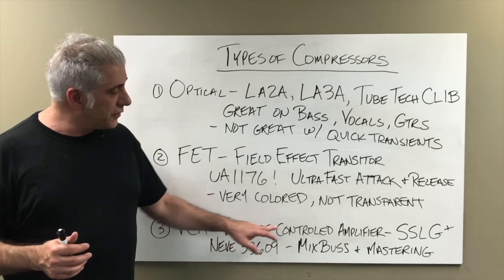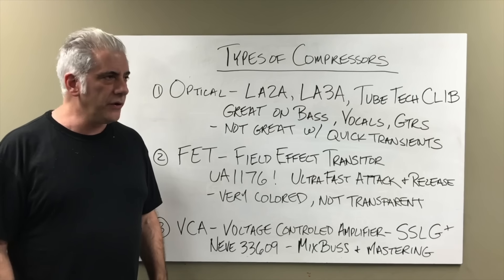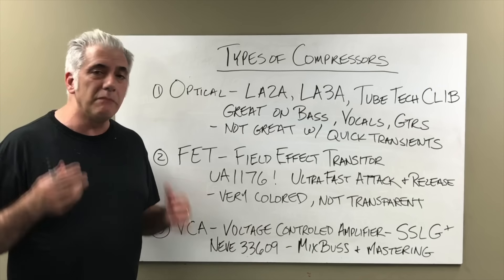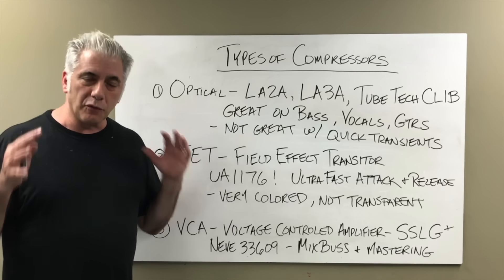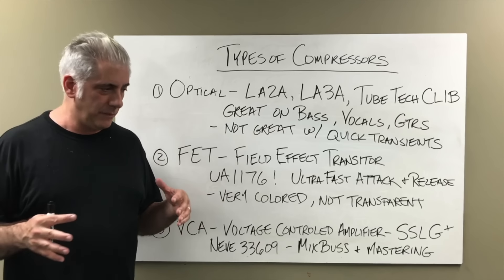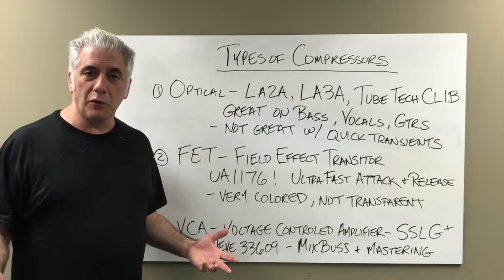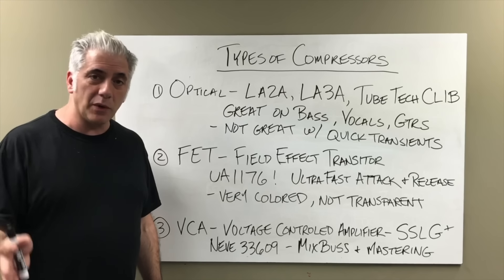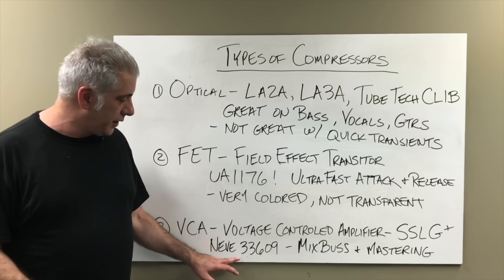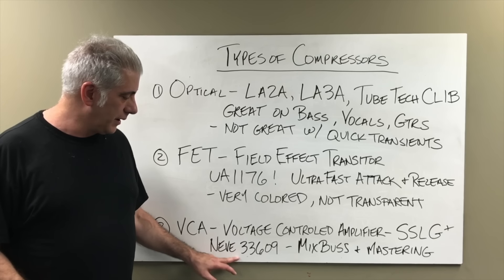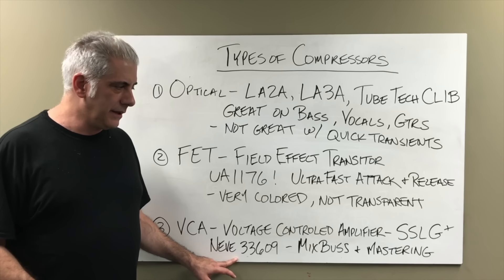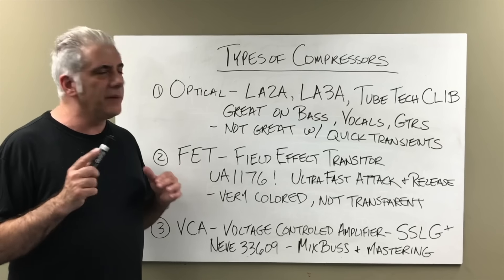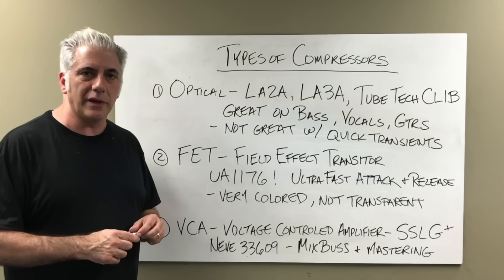The VCA compressor — voltage controlled amplifier. The SSL G+ or the rack unit called the 384, and the Neve 33609 compressor limiter. These are mix bus and mastering compressors. They're great at handling program information, meaning they're great at handling mixes. The emulations are fantastic — I have the Waves and UAD versions of both. I love the UAD version of the Neve 33609. It's a really killer compressor and a lot more versatile than the SSL bus compressor. Because it has a compressor and limiter combined, it's really, really useful.